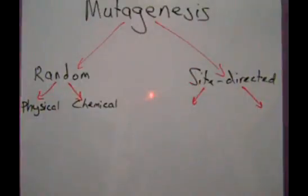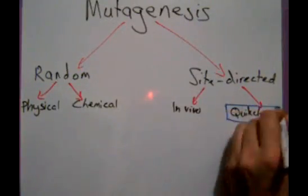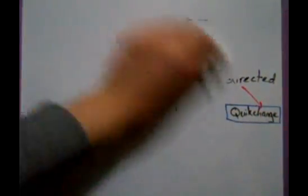Quick change mutagenesis is a subset of site-directed mutagenesis that is capable of creating a whole double-stranded plasmid that incorporates the desired mutation into both strands.